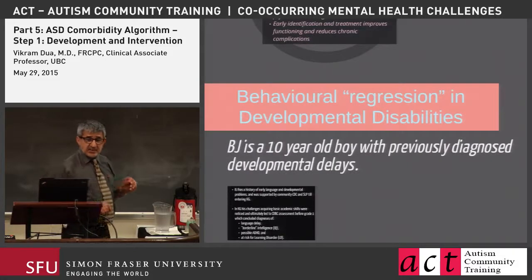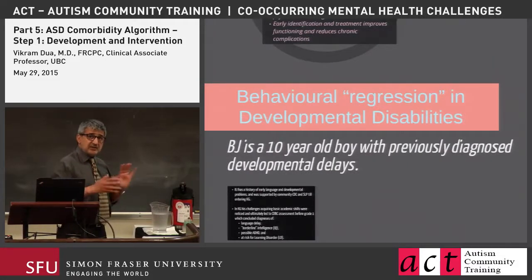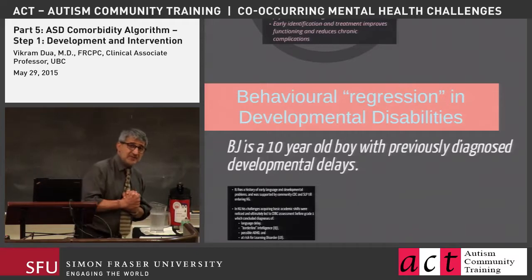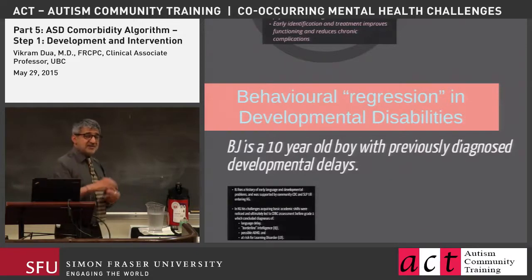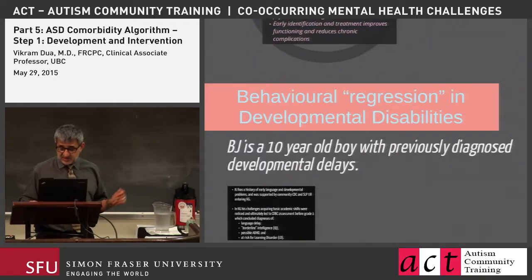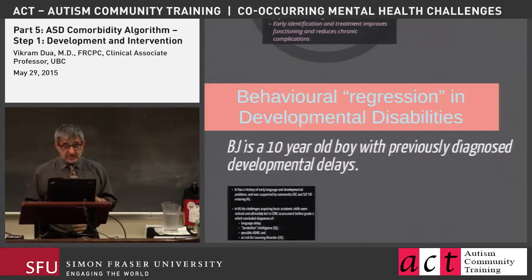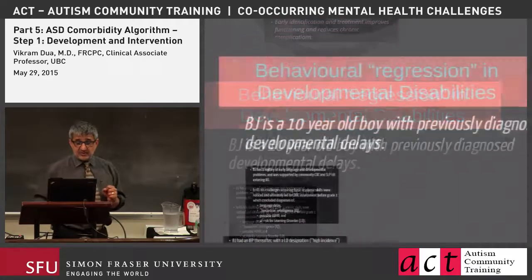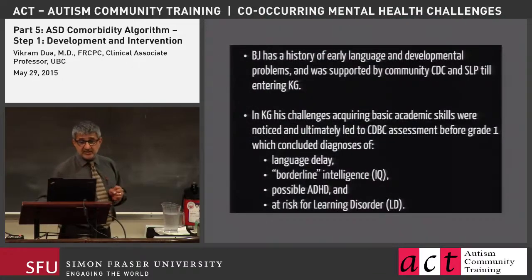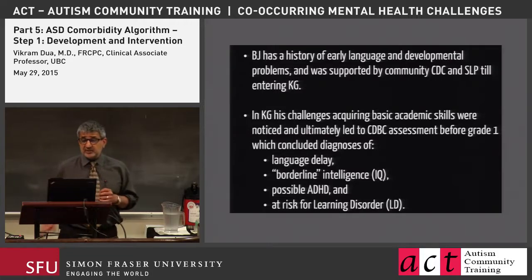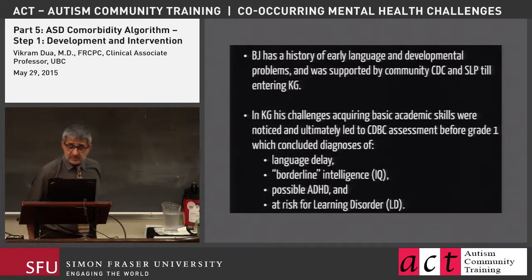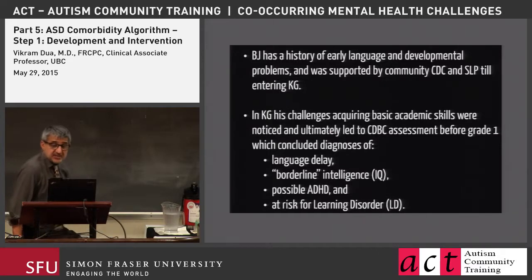Let's look at some cases of kids that illustrate the developmental profile and why these kids might not have autism. We start with BJ, a 10-year-old previously diagnosed with a developmental disability. BJ has a history of some early language and developmental problems and was supported by a Community Child Developmental Center and a speech-language pathologist until entering kindergarten.